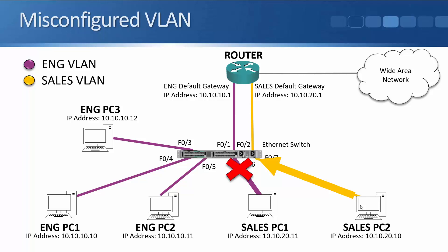So you need to be careful when configuring VLANs. Hosts which are in the same IP subnet should be in the same VLAN, and hosts in a different IP subnet should be in a different VLAN. Engineering PCs go into the engineering VLAN, and sales PCs go into the sales VLAN.